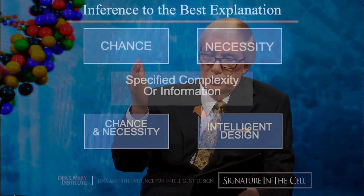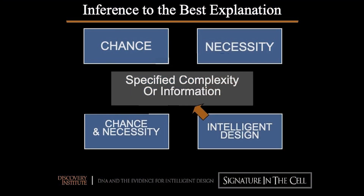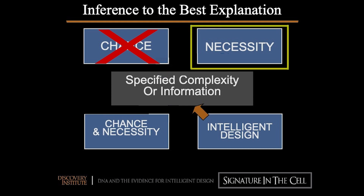People have tried other approaches as well. First of all, chance can't do it — can't explain where we get this information. The next question is: can natural selection overcome these odds? And does that explain the origin of life?